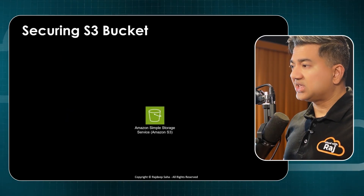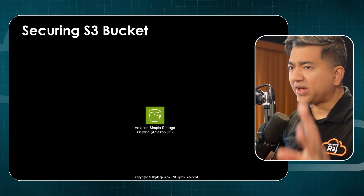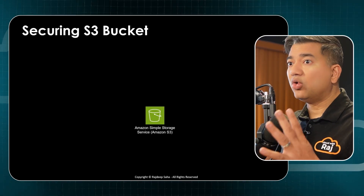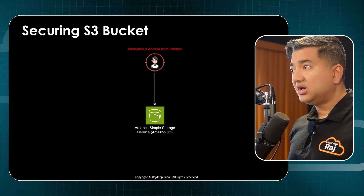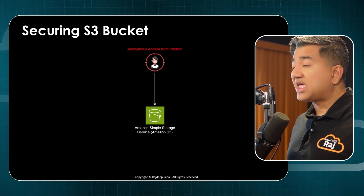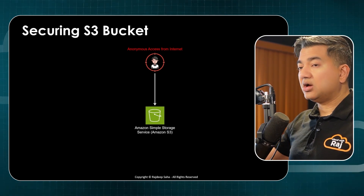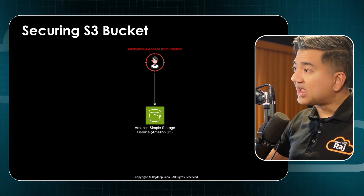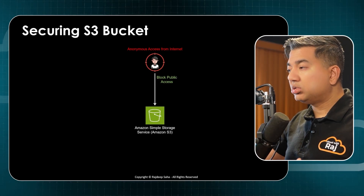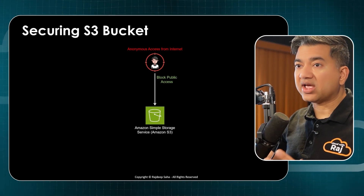When it comes to securing S3 buckets, there are different aspects to cover. First, your bucket objects can be accessed anonymously from the internet — we do not want that. How do you prevent that? You turn on block public access on your S3 bucket.